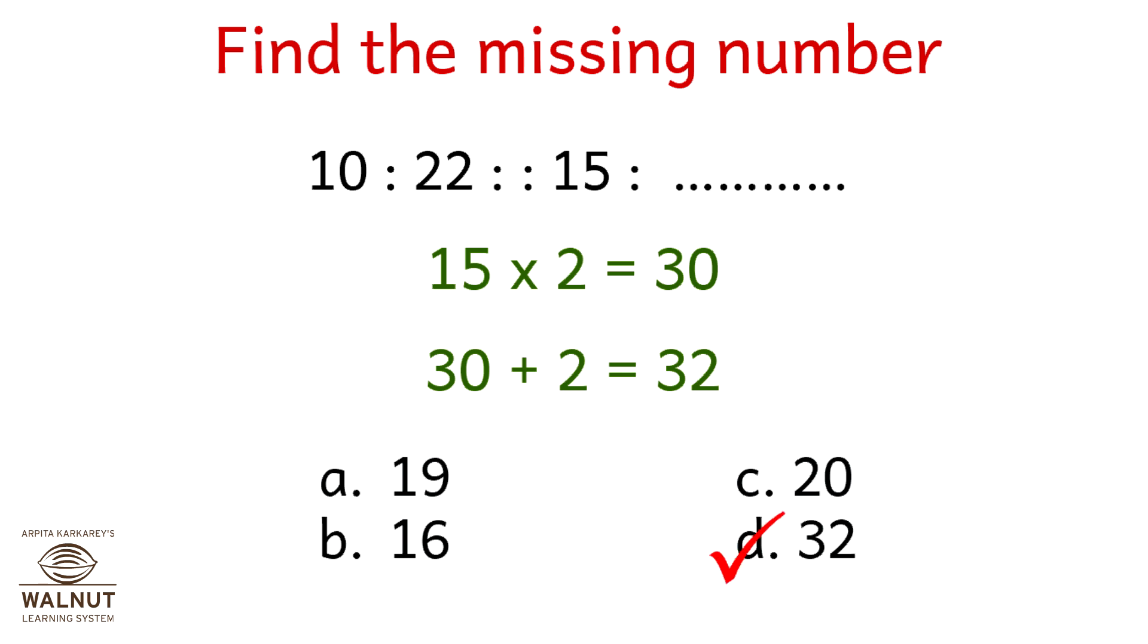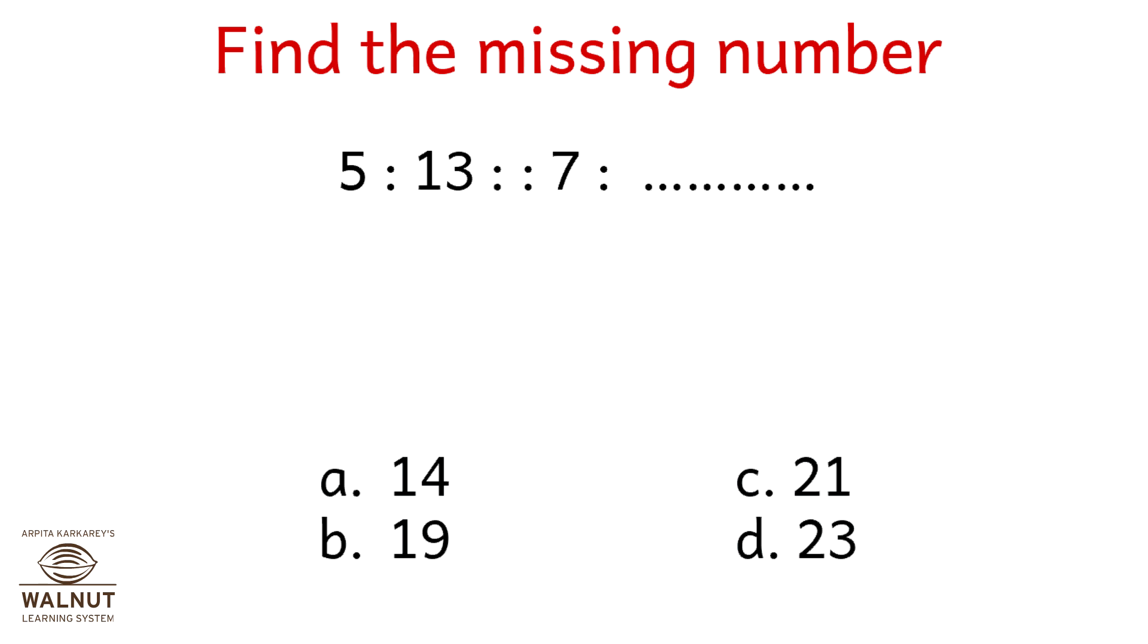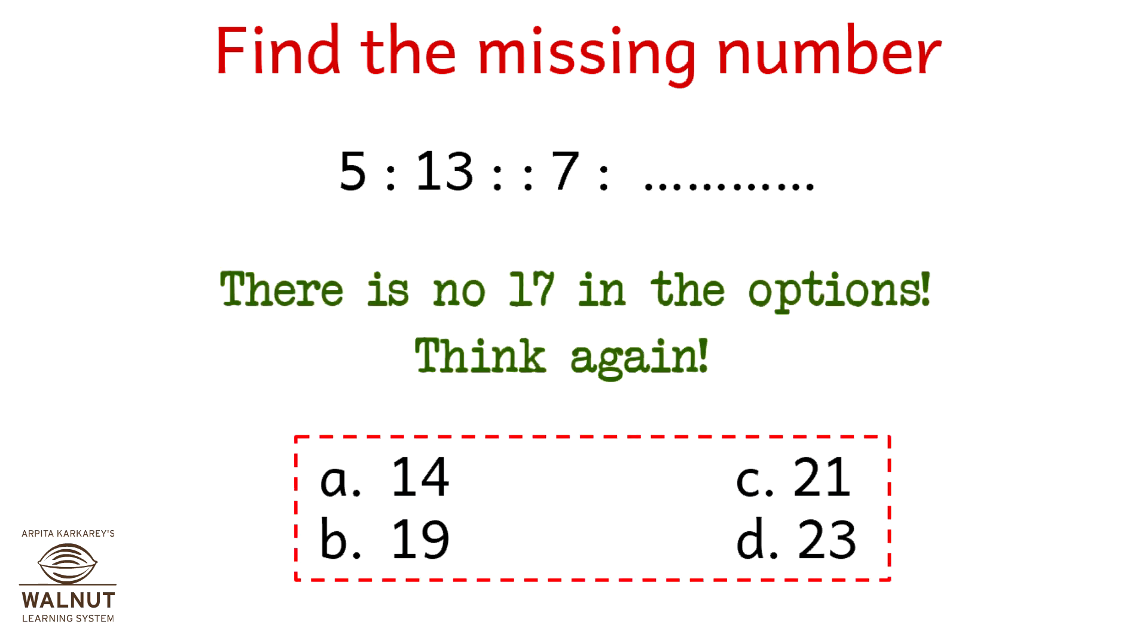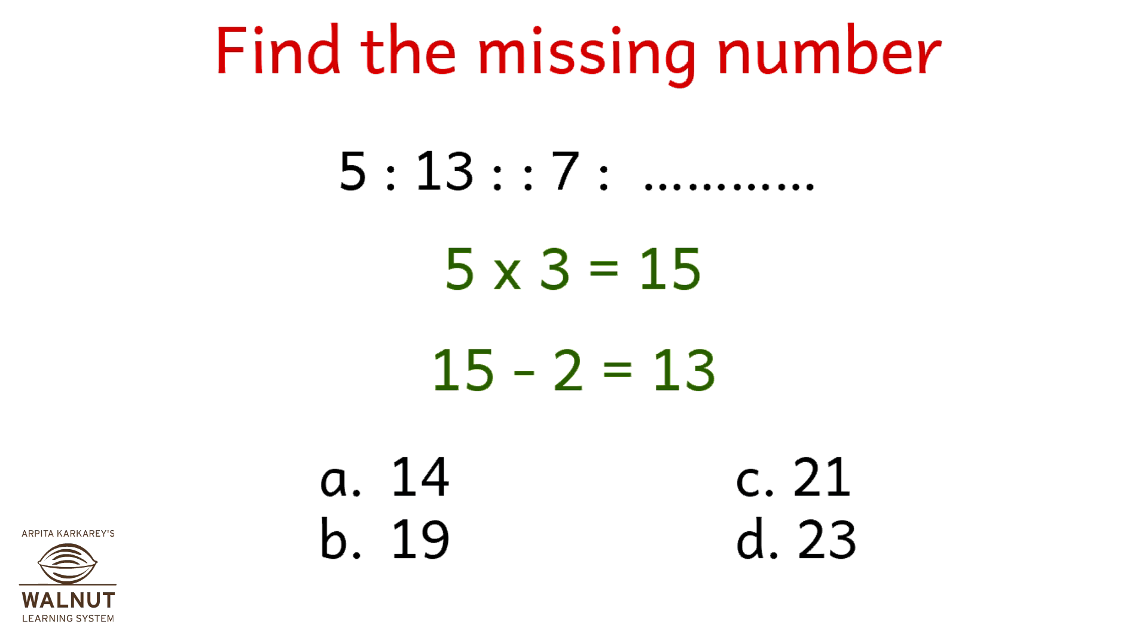Find the missing number. 5 is to 13 as 7 is to what? 5 into 2 is 10, 10 plus 3 is 13. Similarly, 7 into 2 is 14, 14 plus 3 is 17. There is no 17 in the options. Let's think again. 5 into 3 is 15, 15 minus 2 is 13. 7 into 3 is 21, 21 minus 2 is 19. Is 19 in the options? Yep, option number 2.